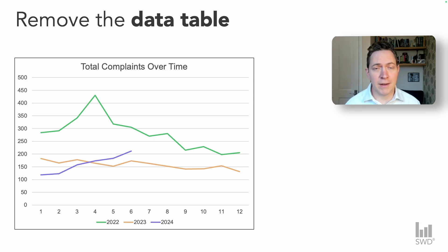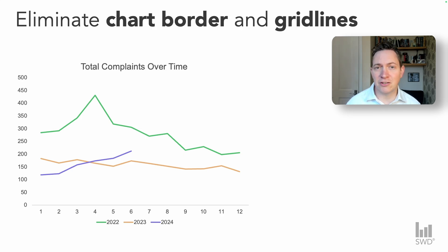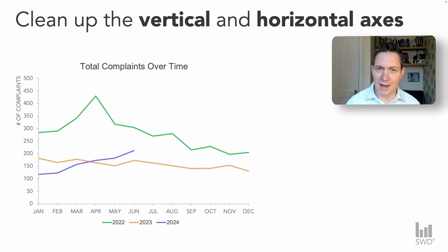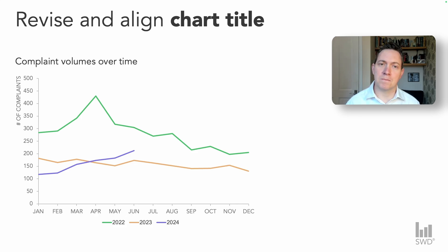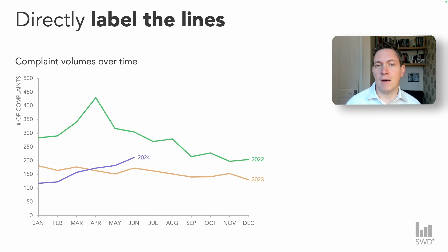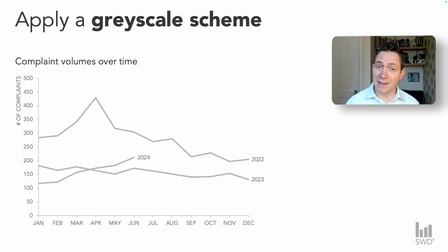I'm going to take the opportunity now to clean up the general formatting of my visual. This comprises a number of simple yet important formatting steps. First, I'm going to remove the chart border and grid lines. I'm going to clean up my horizontal and vertical axes before rewriting and aligning the chart title. Instead of using a legend, I'm going to directly label the lines. And finally, format the lines by making them a little bit thicker and removing the color. Now I have a blank canvas to bring my takeaways to life.